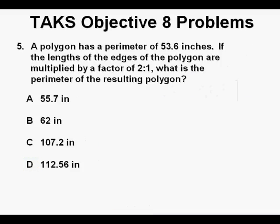Problem 5. A polygon has a perimeter of 53.6 inches. If the lengths of the edges of the polygon are multiplied by a factor of 2 to 1, what is the perimeter of the resulting polygon? The thing we need to understand when looking at these problems is what happens to perimeter, area, and volume when we multiply dimensions by scale factors. For a perimeter that is a length or a one-dimensional number, a factor of 2 would be times 2 to the power of 1, or 2.